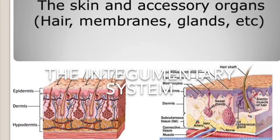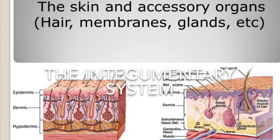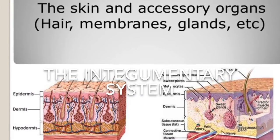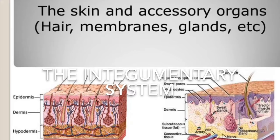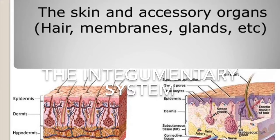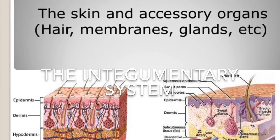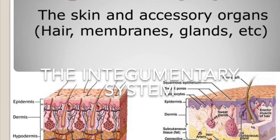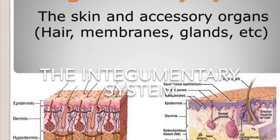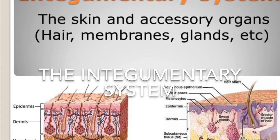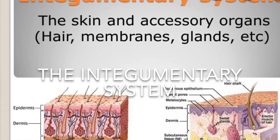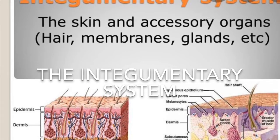Today we will be talking about the integumentary system. What is the integumentary system? Well, this system consists of the skin, nails, glands, and nerves, and its main function is to act as a barrier to protect the body from the outside world.